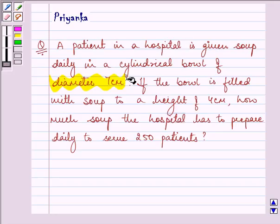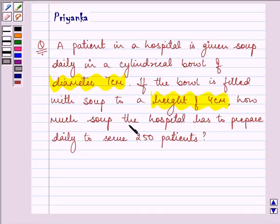If the bowl is filled with soup to a height of 4 cm, how much soup does the hospital have to prepare daily to serve 250 patients?